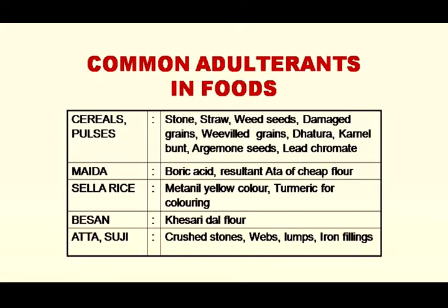In besan, kesari dal flour — a cheaper quality dal — is added. In atta or suji, crushed stones, husks, lumps, and iron fillings are added.